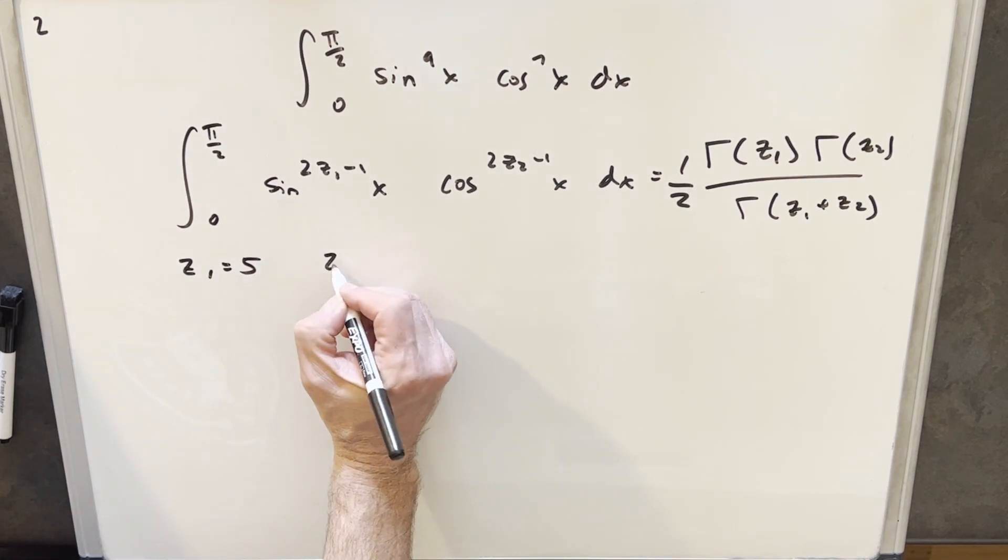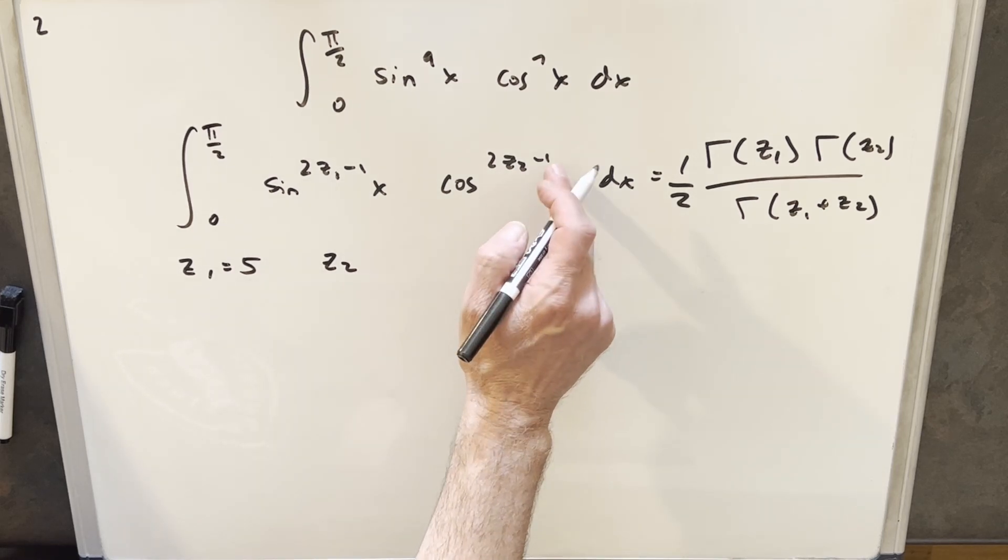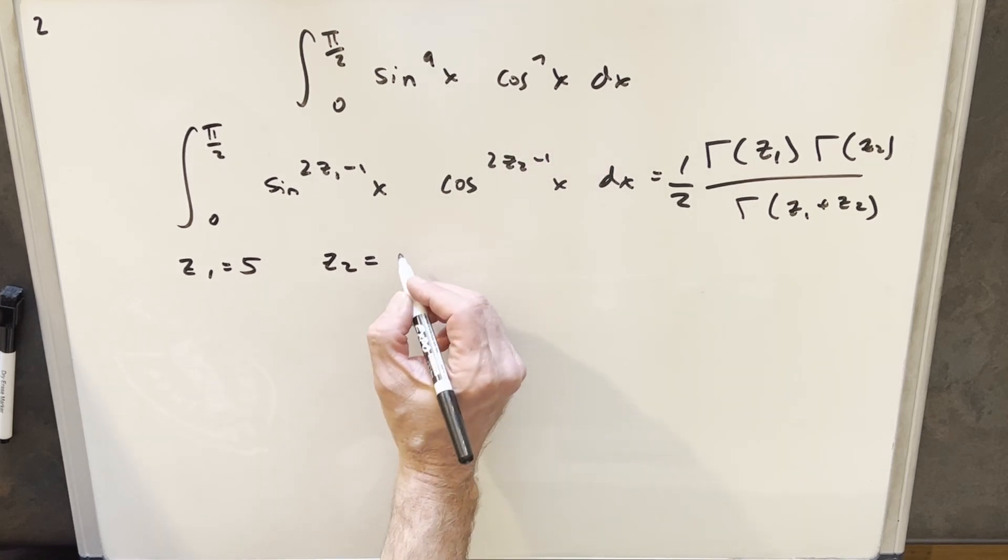And then doing the same thing to find our z2 value, if 2z2 minus 1 is 7, then z2 is going to equal 4.